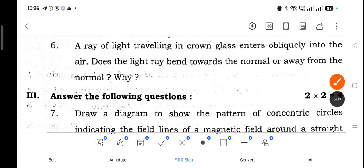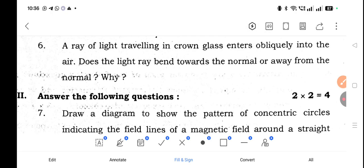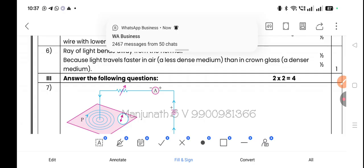Question 6: A ray of light traveling in crown glass enters obliquely into air. Does the light ray bend towards the normal or away from the normal and why? Ray of light bends away from the normal because light travels faster in air than in crown glass. When light travels from denser medium to rarer medium, it bends away from normal.